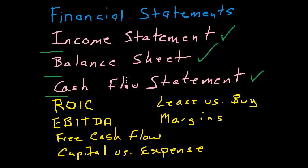Then we're going to look at some of the metrics that airlines and Wall Street analysts use to measure airline performance. We'll look at ROIC — return on invested capital — and EBITDA, which is earnings before interest, taxes, depreciation, and amortization, as a measure of cash flow. We'll also look at free cash flow and how managing it from quarter to quarter can impact the long-term health of an airline, as well as the difference between capital and expense and how that shows up on the balance sheet and income statement.